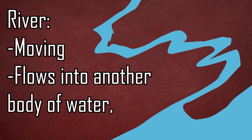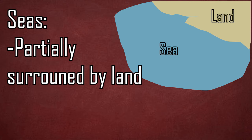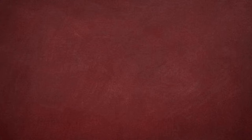Seas are bodies of water partially surrounded by land, and you can see the land. And lastly, oceans are bodies of water larger than seas, and are not landlocked. You cannot see any land.